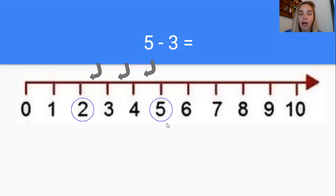So I'll start by circling five on my number line and counting backwards three. So one two three. I've landed on the number two. I'm going to circle that number. So five take away one two three equals two. Let's try a couple more.